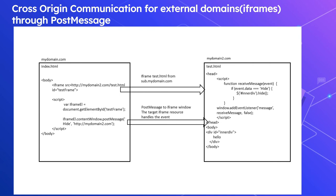In index.html, we send a message event to the iframe window. We get the element with id 'testframe', then call element.contentWindow.postMessage with the message 'hide' and the target origin http://mydomain2.com. You can also specify a star ('*'), which means the event is sent to all windows. Here we restrict it to mydomain2.com. In test.html, we add an event listener of type 'message' with a handler called receiveMessage. In receiveMessage, we check whether event.data equals 'hide', and if so, we hide the inner div.